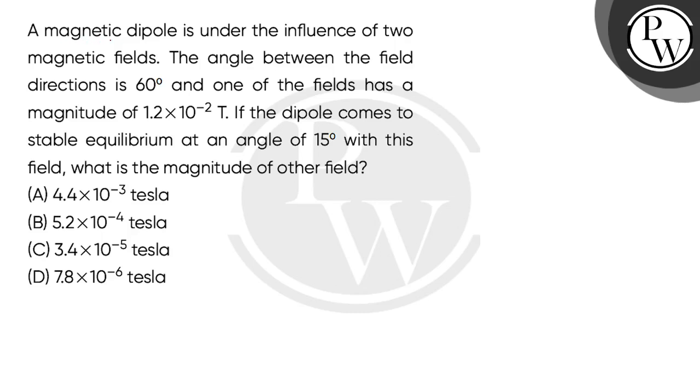Let's read the question. A magnetic dipole is under the influence of two magnetic fields. The angle between the field directions is 60 degrees, and one of the fields has a magnitude of 1.2 × 10^-2 tesla. If the dipole comes to stable equilibrium at an angle of 15 degrees with this field, what is the magnitude of the other field?